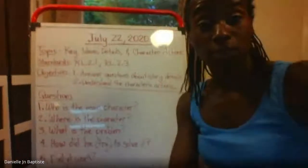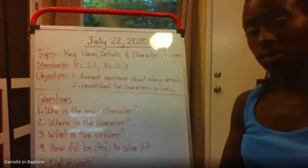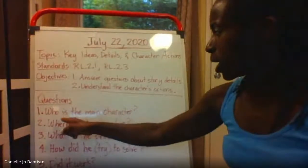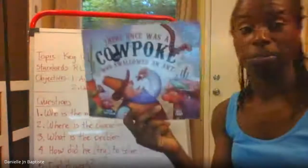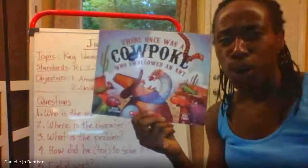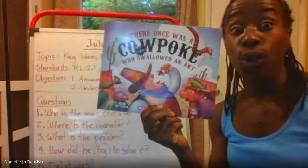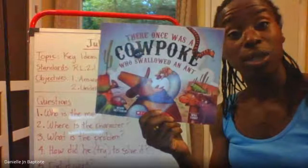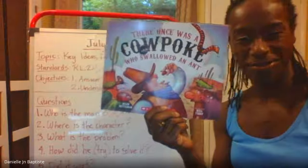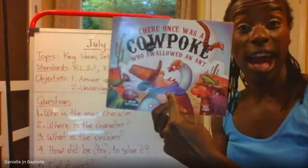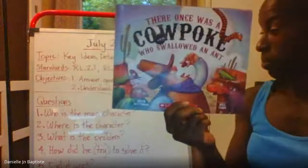So after this book, let's take a look at the questions and answer them. Number one: who is the main character? Well, let's take a look at the book again. Who is this book mostly about? That's right — it's about the cowpoke, or the cowboy. That's what it's about.